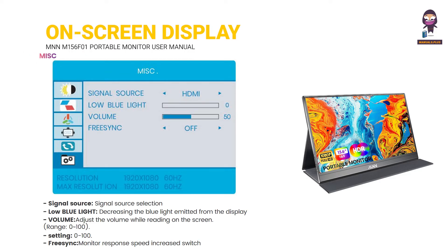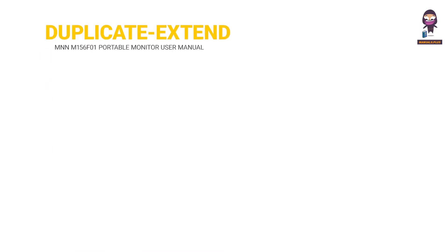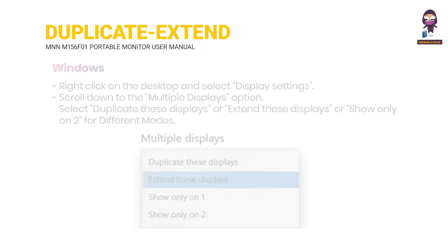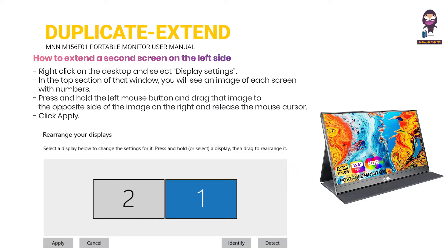Windows: Using the duplicate and extend second screen options. How do you extend a second screen on the left side?